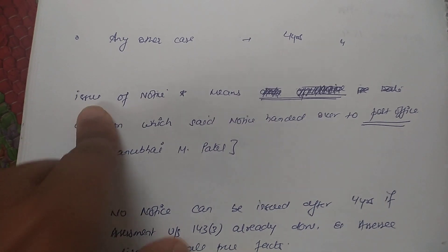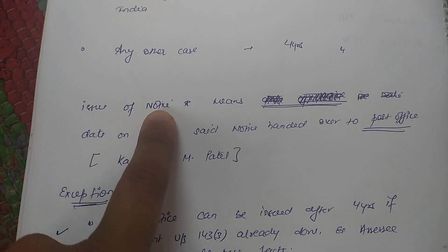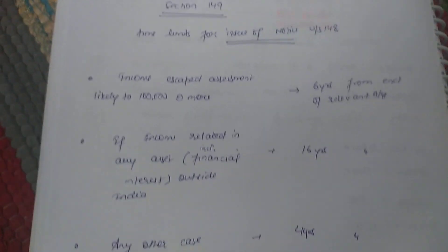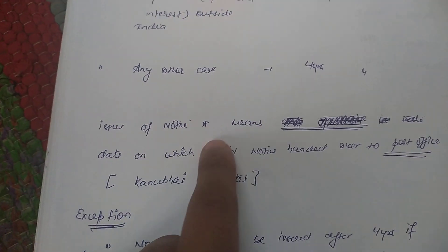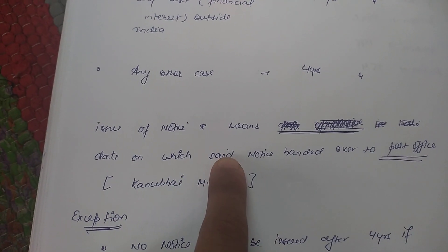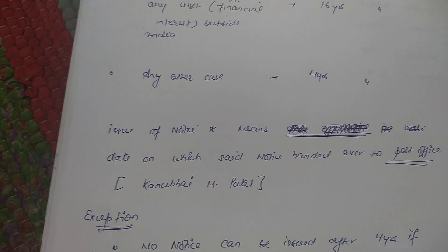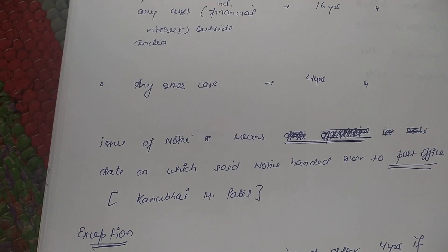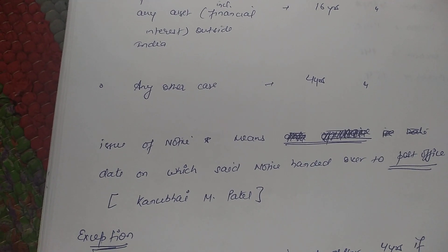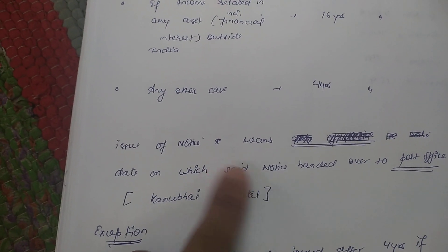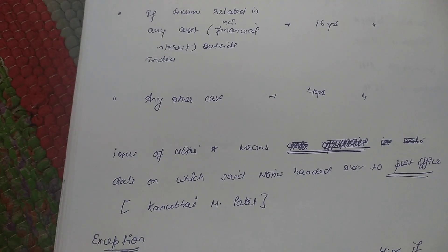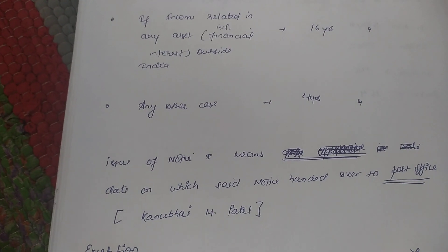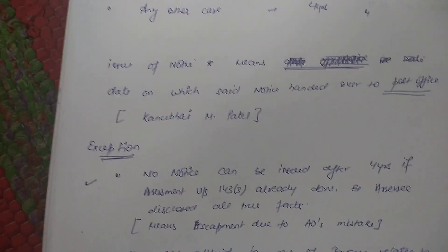An important point under Section 149: 'issue of notice' means the date on which the said notice is handed over to the post office. That means the day on which the AO hands over the notice to the post office is treated as the date of issue of notice. This was held in the case of Kanubhai M.P.T.L., where the court said the date of issue is when the AO hands over the notice to the post office.